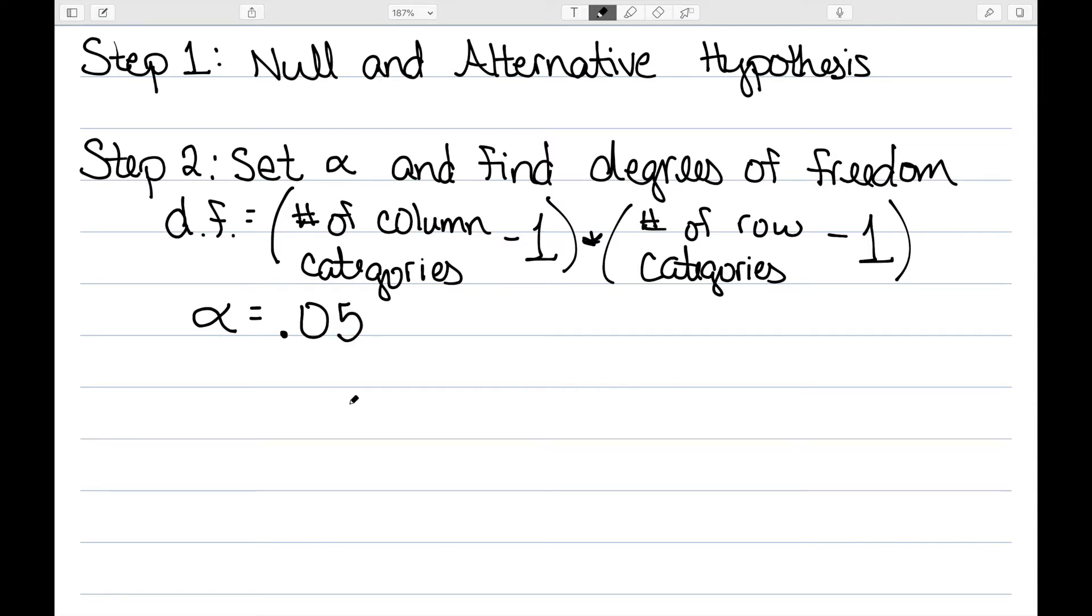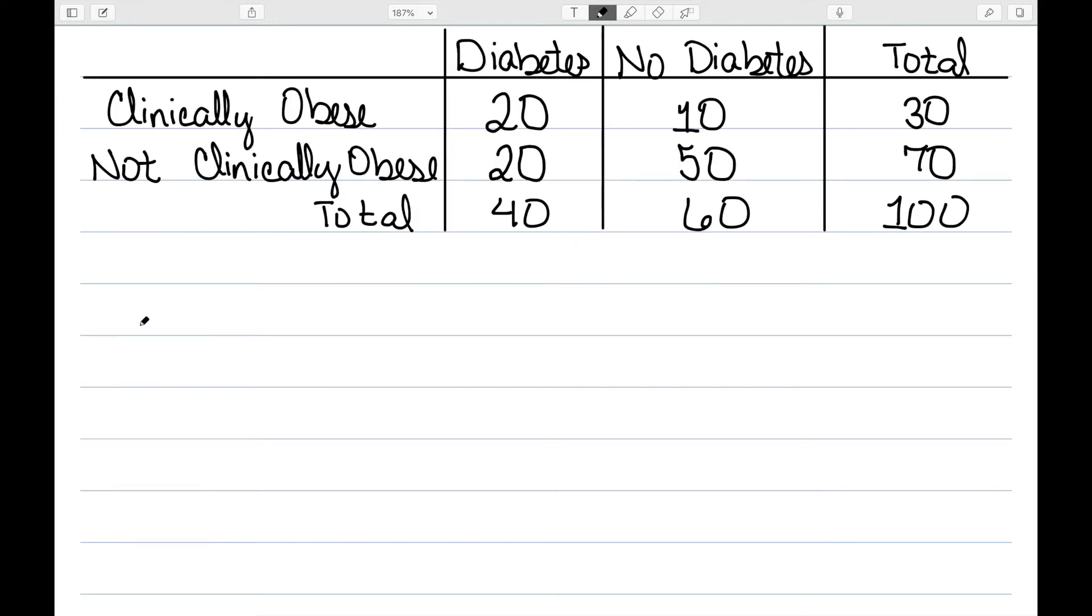Let's see if we can do this for our given example. Here's my two-way table. As I said before, the standard value for alpha is 0.05. My degrees of freedom, I look at the number of column categories. There are two column categories minus one.